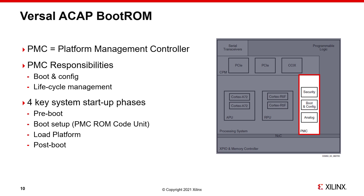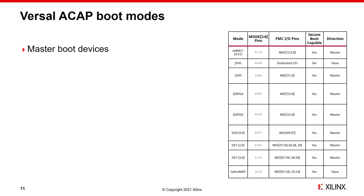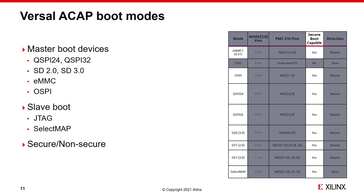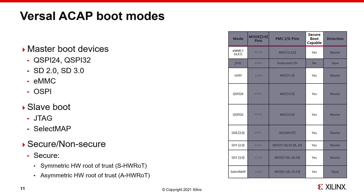Phase 4 is post-boot: the PMC transitions to platform management and monitoring services, which includes power management, partial reconfiguration, system error management, safety monitoring, security monitoring, and soft error mitigation. The PMC can boot the system from primary master boot devices: QuadSPI using 24 or 32-bit addressing, SD2.0 on SD1, SD3.0 on SD0 or SD1 with an external SD3.0 compliant voltage level shifter, EMMC on the EMMC-1 controller in FAT16/32 or RAW mode, and OctalSPI. Primary slave boot modes are JTAG and SELECTMAP. All primary boot modes except JTAG are secure boot capable, supporting both symmetric and asymmetric hardware root of trust.